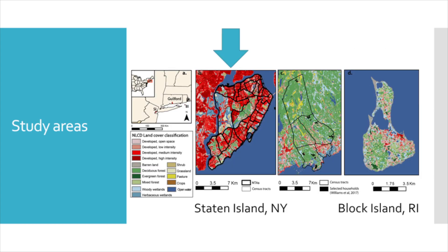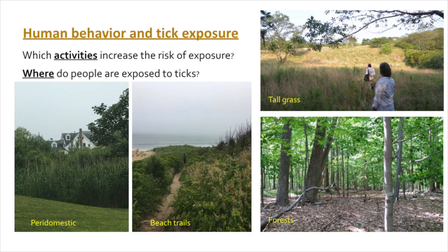We're conducting this study in Staten Island, New York, which represents a more urbanized area, and in Block Island, Rhode Island, which is an island that is hyper-endemic for Lyme disease and has a mostly suburban character — similar to what you'd see in Connecticut. We're interested in how the ecological context affects risk perception and activity, so we're conducting this comparison across locations. We also hope to include Connecticut in the future, but we don't have the funding yet.